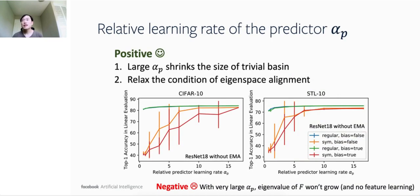Similarly, we also study the trade-off of other parameters. For relative learning rate of the predictor α_p, a large α_p will shrink the size of the trivial basin as well as relaxing the condition of eigenspace alignment. Experiments also show that large α_p helps the final performance of downstream tasks, in particular when the weight is symmetric. The negative effect is that if α_p is too large, then it will halt the learning process. Even when p_j grows quickly, s_j does not grow and feature learning does not happen.